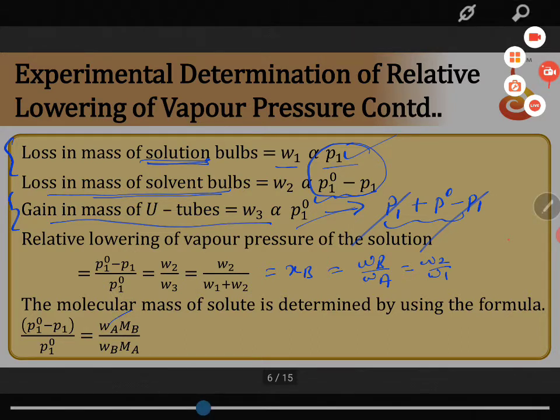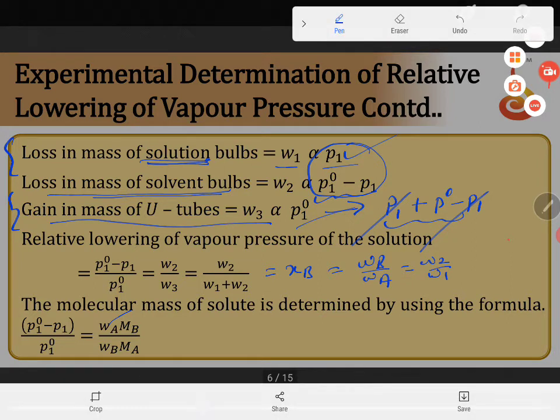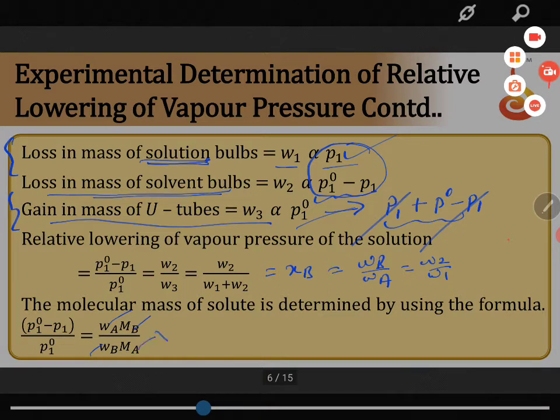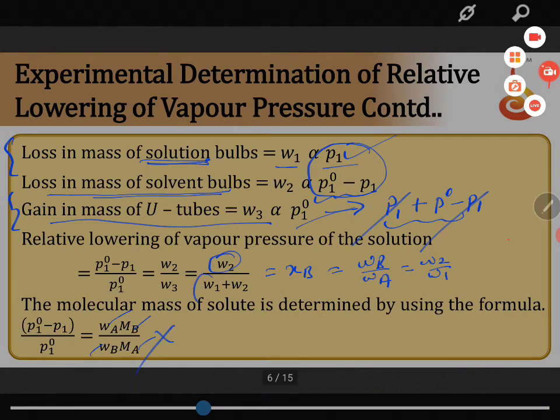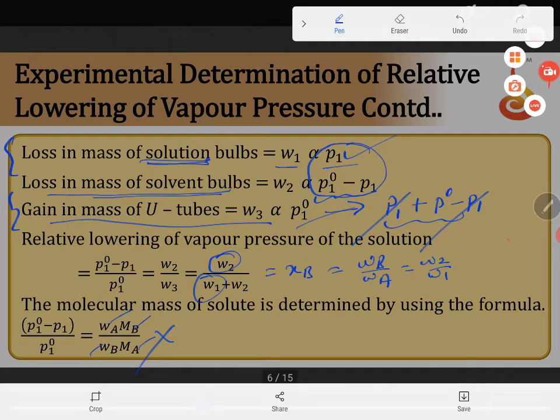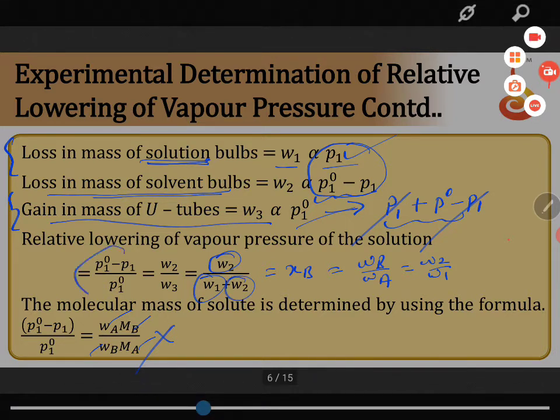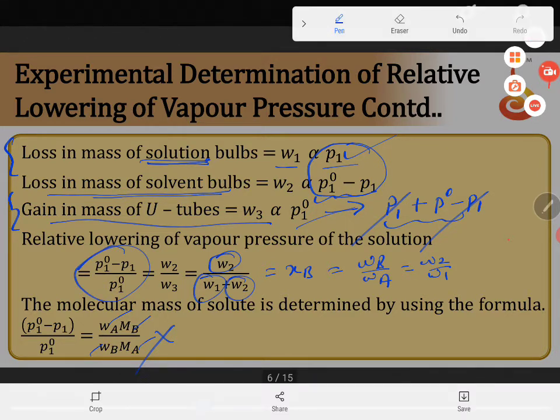Knowing the values of WA, knowing the values of W1, because it is WA, MB, WB, MA, we don't know this. But we know the values of W2 and W1. So based on this, if you take the ratio of these two, or if you take this one also, we will be able to find out the relative lowering of vapor pressure. And that is how we are determining the relative lowering of vapor pressure.